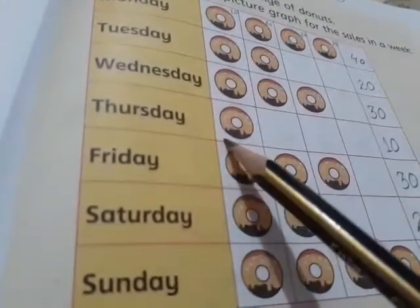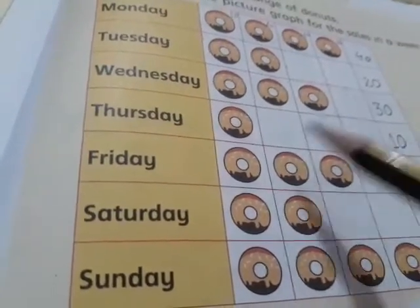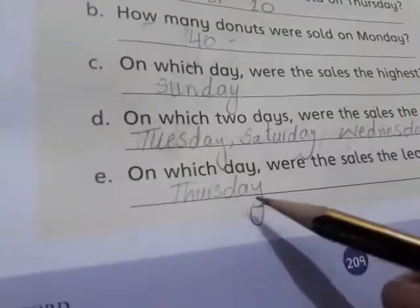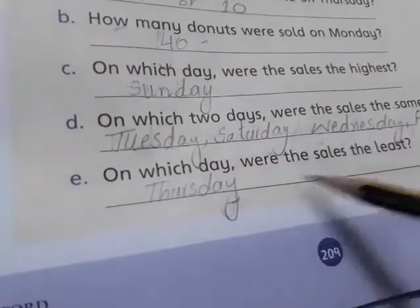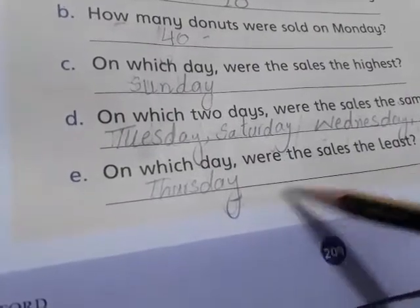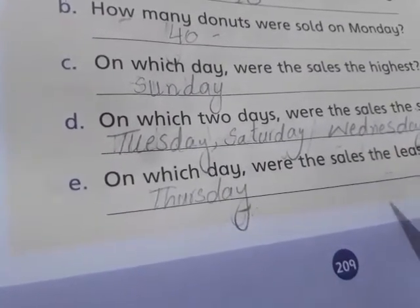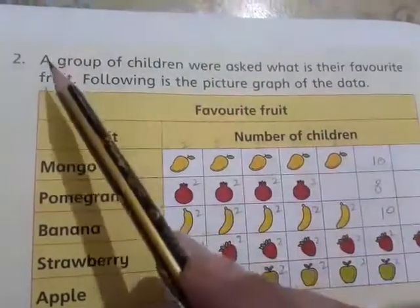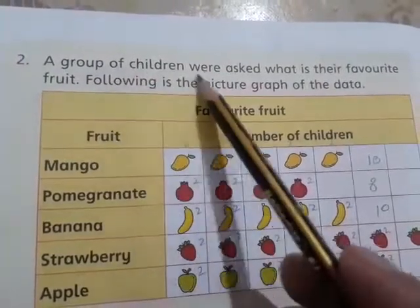The last question: on which day were sales the least? Sab se kam sale kis day mein thi? On Thursday there is only one donut symbol, so Thursday had the least sales. Thursday will have the least sale.